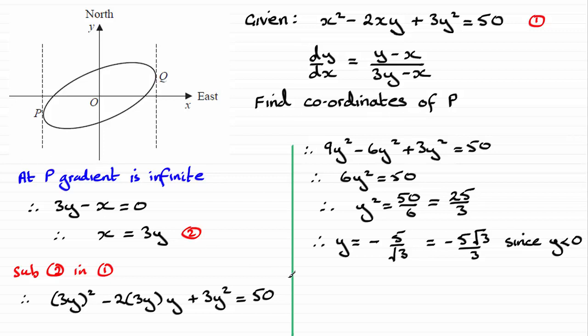Having got that, we can now substitute that value back into equation 2. So I'll put sub in 2 here. That will give us our x coordinate now. So we therefore have x equals 3 times the y value, 3 times the negative 5 root 3 over 3. And that gives us, well, those 3's cancel out, just minus 5 root 3.